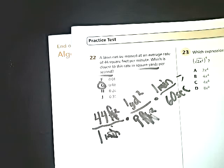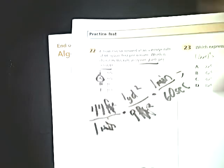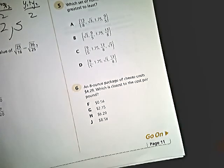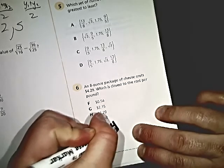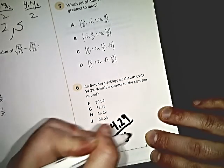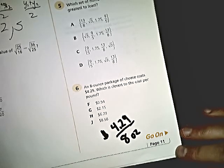The other one I want to do is number six. An eight-ounce package of cheese costs four dollars and 29 cents. So that would be $4.29 per eight-ounce package. What is the closest to the cost per pound?